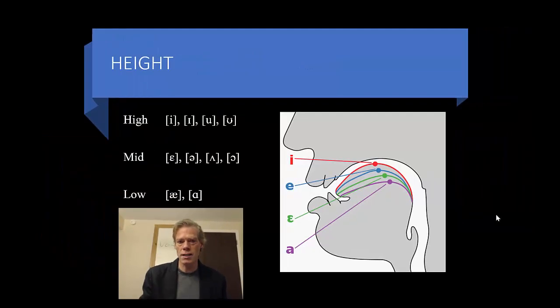The first distinction that we're going to look at is height. So in English, and we're concentrating on English right now, we have the high vowels E, and notice that this one here, what looks like an alphabetic I, is always going to be pronounced E in the IPA.